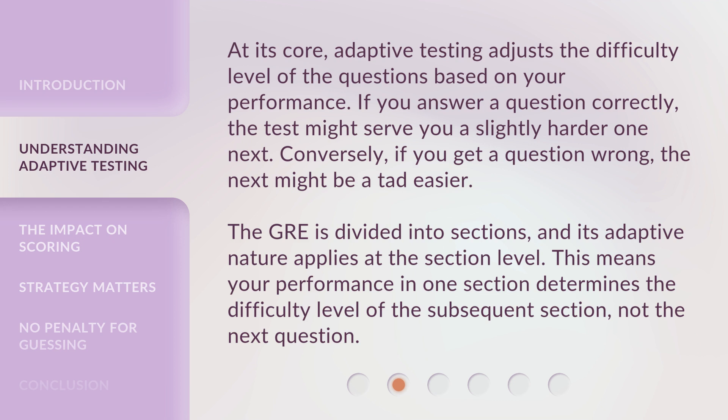At its core, adaptive testing adjusts the difficulty level of the questions based on your performance. If you answer a question correctly, the test might serve you a slightly harder one next. Conversely, if you get a question wrong, the next might be a tad easier. The GRE is divided into sections, and its adaptive nature applies at the section level. This means your performance in one section determines the difficulty level of the subsequent section, not the next question.